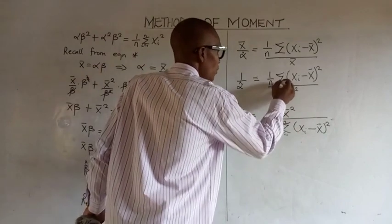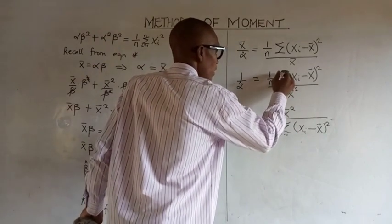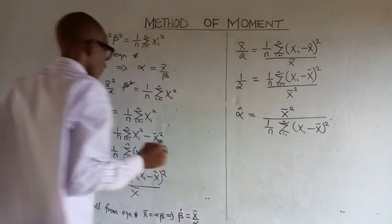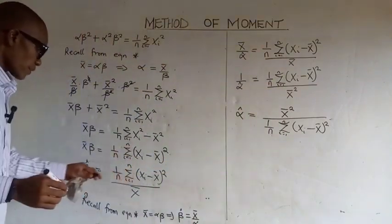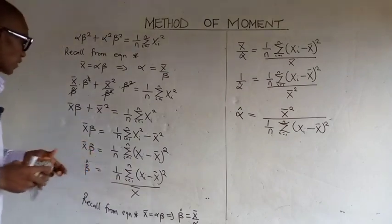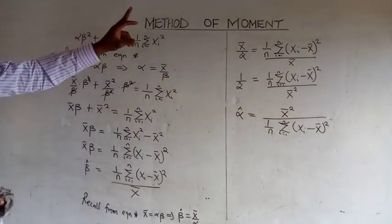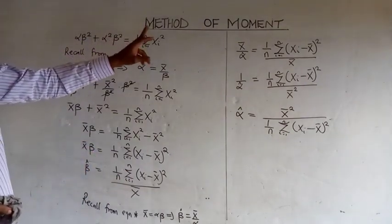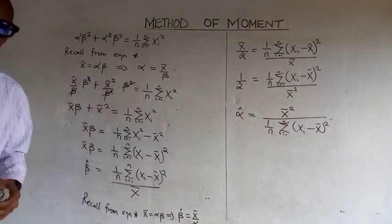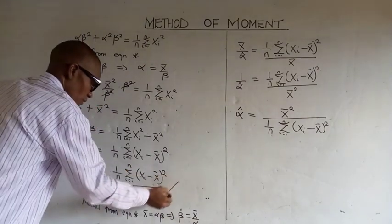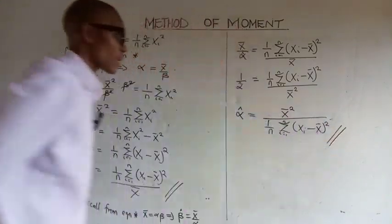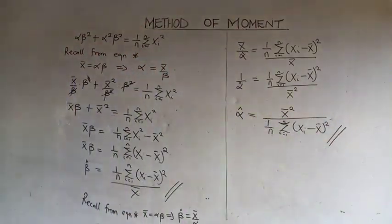The index i ranges from 1 to n throughout. This is how we obtain the method of moments for the gamma distribution function. Our beta estimate and alpha estimate have now been derived.